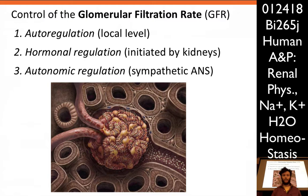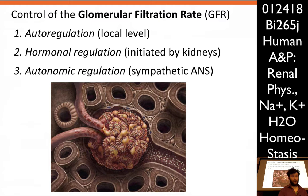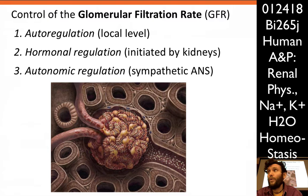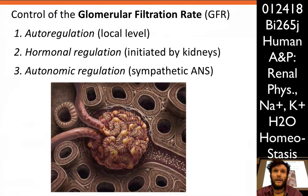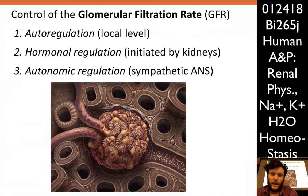The amount of filtrate you produce is dependent on what's called the glomerular filtration rate. There are a few different ways to control the GFR: local autoregulation, endocrine control (initiated by the kidneys with a number of hormones), and neuronal control via the autonomic nervous system. You don't think to yourself 'I need to produce more urine, better wake the kidneys up.' That is part of the sympathetic innervation to the kidneys. So three ways: autoregulatory local mechanism, endocrine control, and sympathetic ANS.